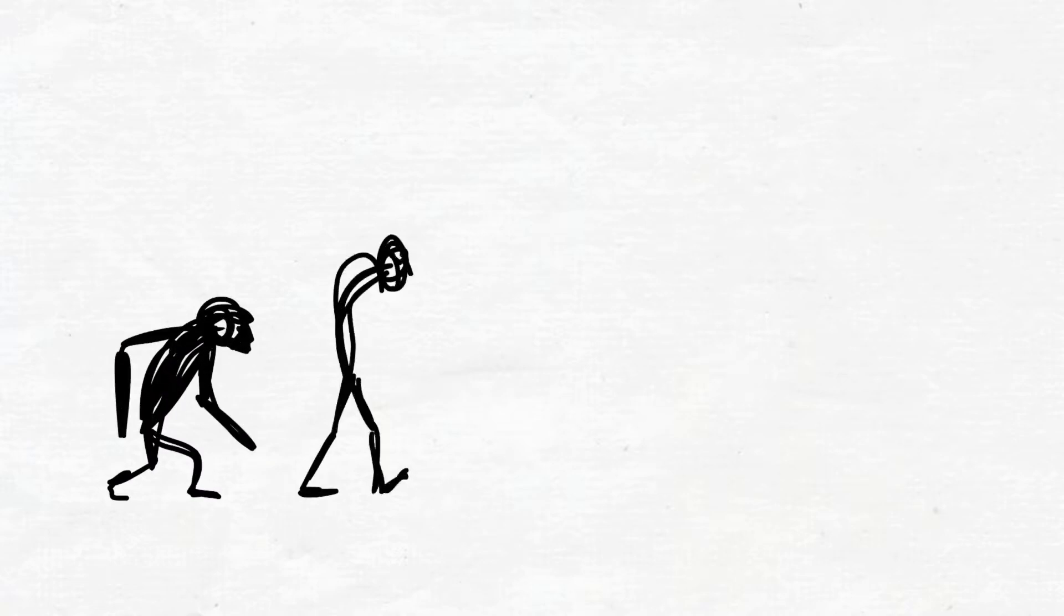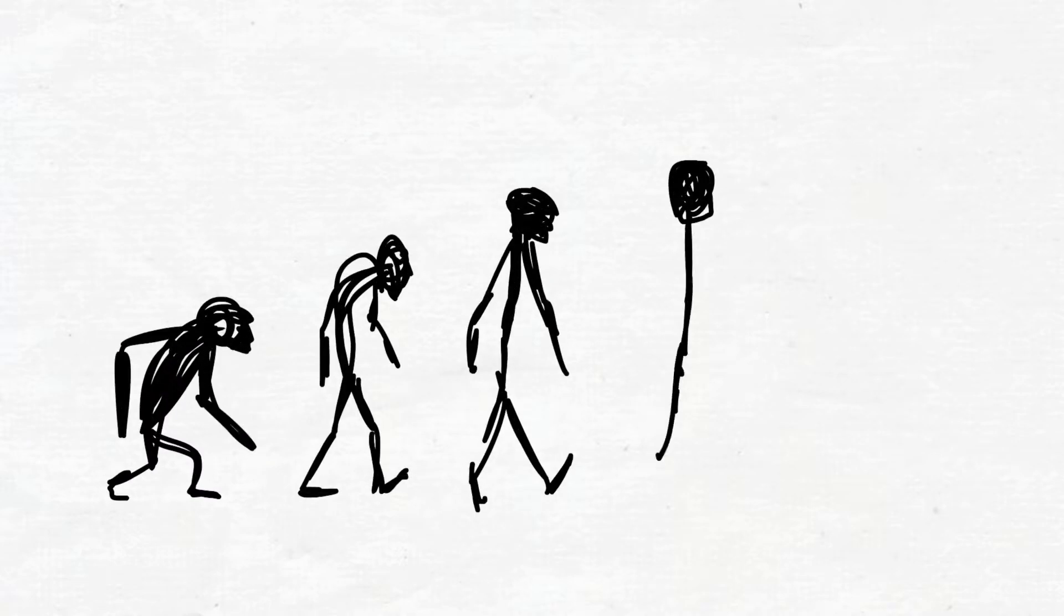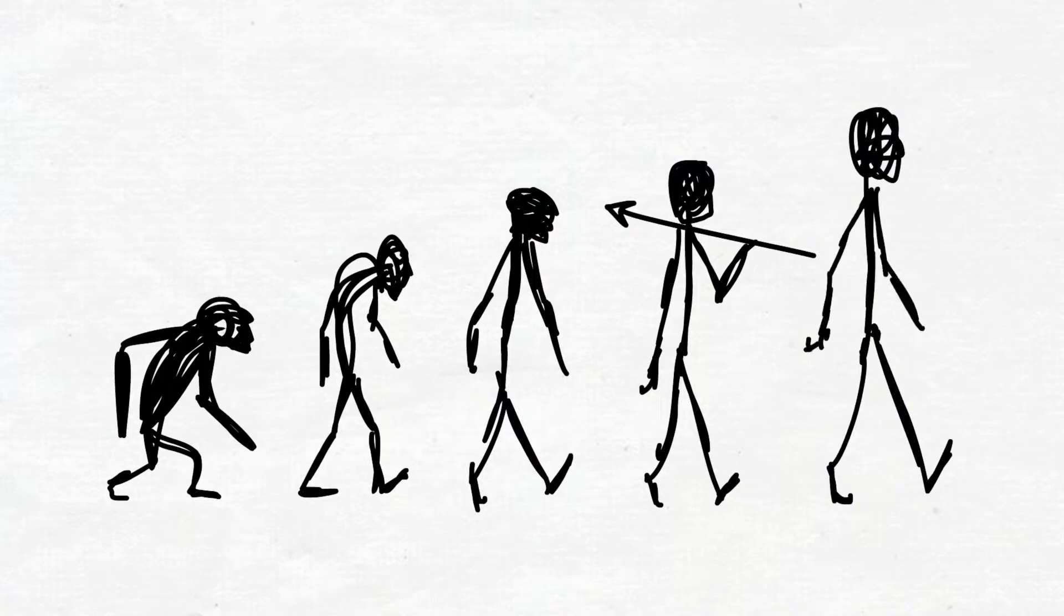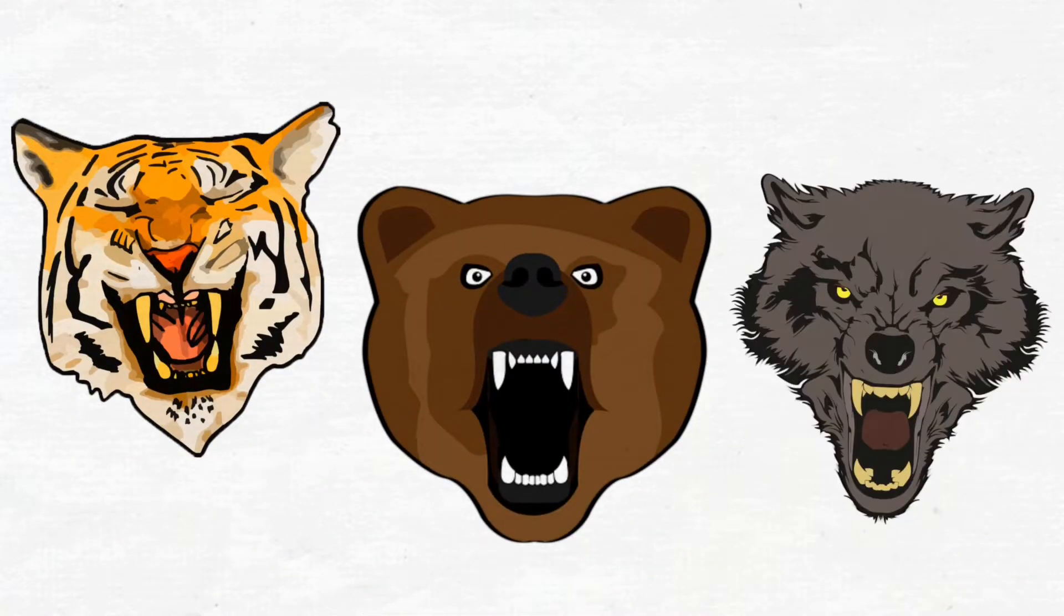Because evolution, over millions of years, selected the brains of our ancestors who survived such life-threatening dangers, especially big predators trying to kill and eat them.